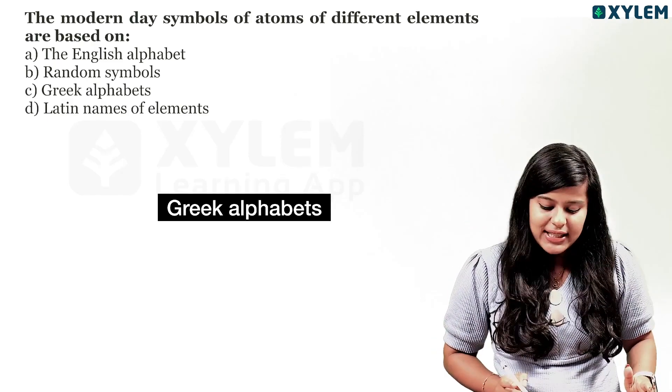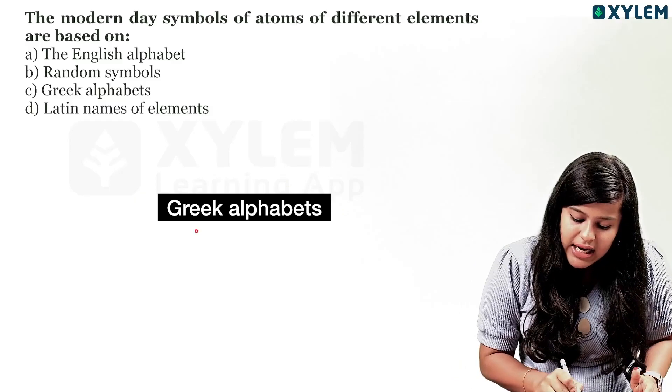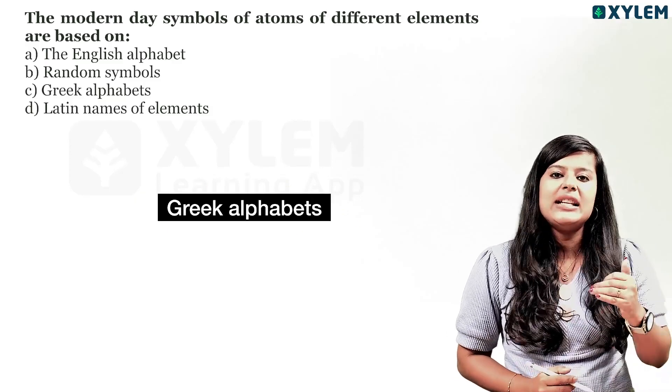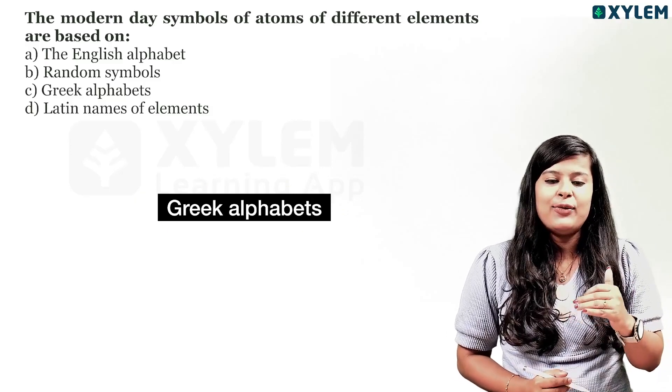The correct answer is Latin names of the elements. We do not follow Greek alphabets. We are modern — element symbols are based on their Latin names.